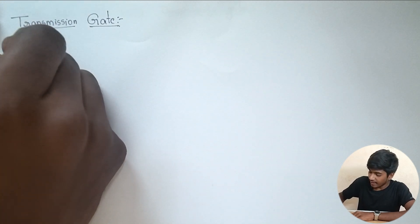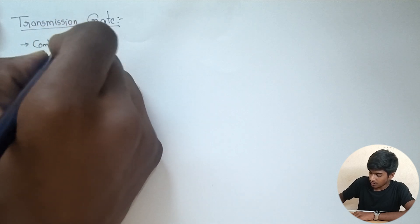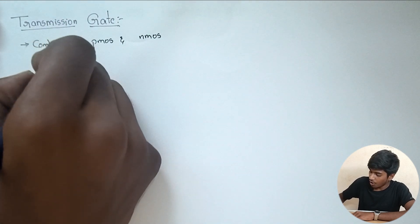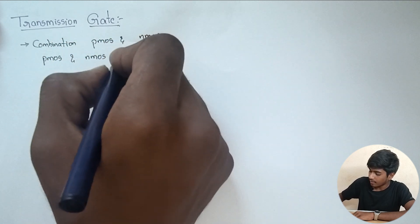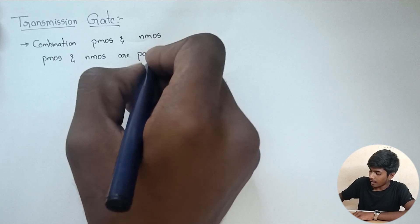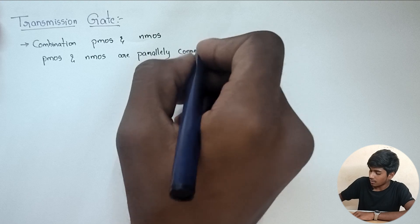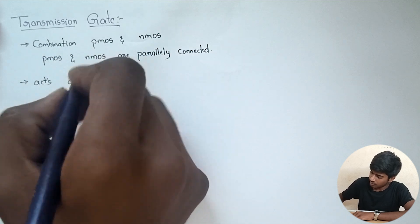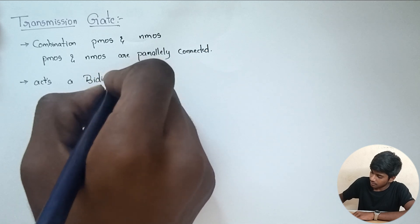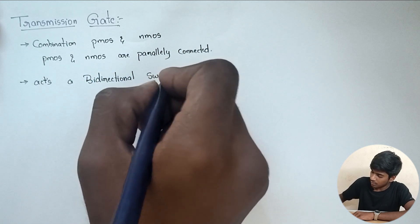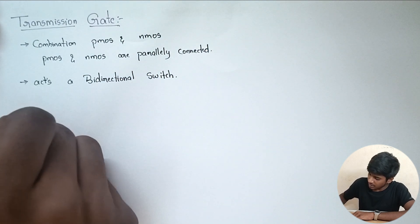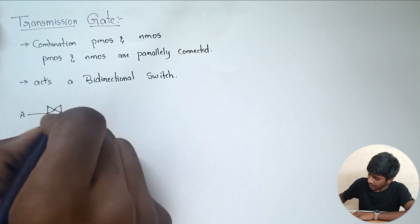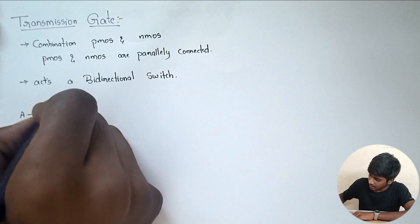So what is a transmission gate? It is a combination of PMOS and NMOS, but PMOS and NMOS are parallelly connected, and it acts as a bi-directional switch. The symbol for this transmission gate has input A, output B, and a control signal C and its complement.